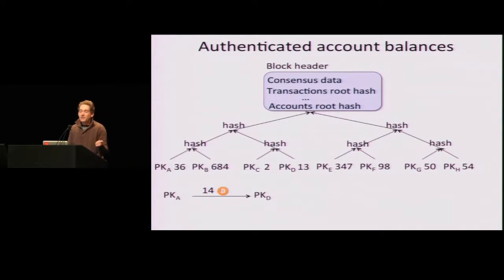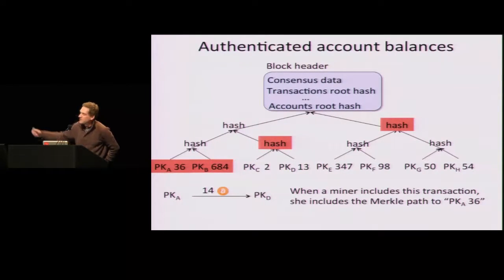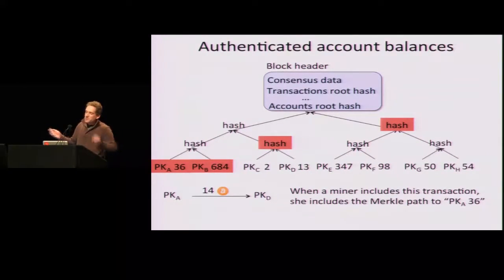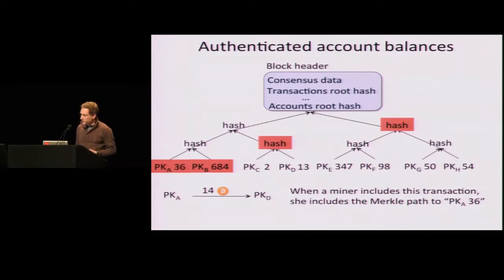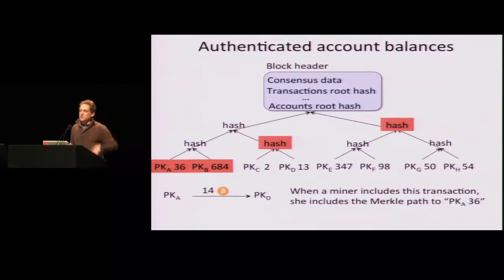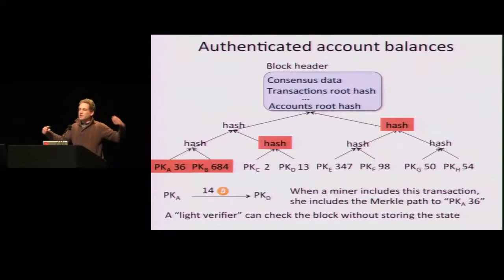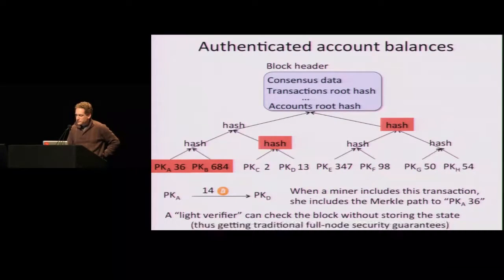If I want to prove that Alice is sending 14 bitcoins to David and really has that money, I send an authenticating path — the Merkle path, which are the hashes of siblings on the path from the leaf to the root of the Merkle tree. Anyone validating the transaction will be able to verify that this is indeed a leaf in the Merkle tree. A light verifier can check the entire block of transactions without storing the huge key-value store, just by verifying these Merkle paths — getting full-verifier security guarantees. Each transaction includes the Merkle path that proves Alice has the correct amount.